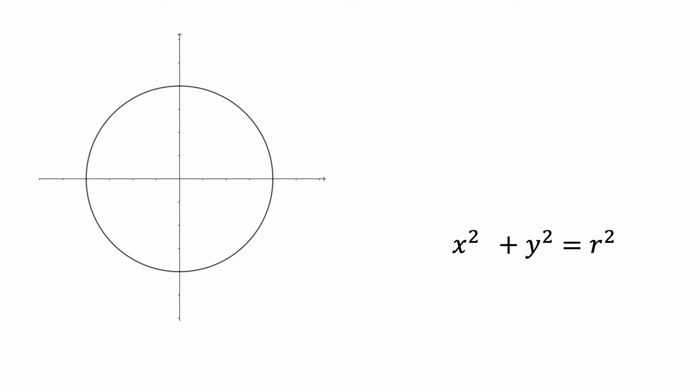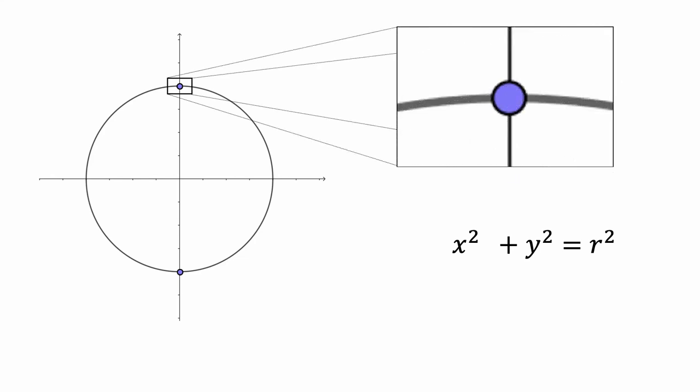You probably noticed that this isn't a function. For example, when x is 0, there are two corresponding y values. However, if we zoom in on one of these points, on this small section of the graph, y is a function of x.